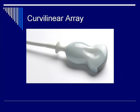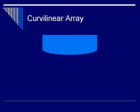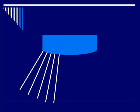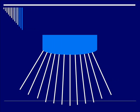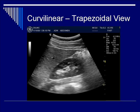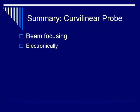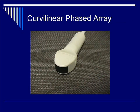Next, let's talk about curvilinear array. Typically it consists of 128 elements, again like the linear array. One element or a subset of elements are scanned sequentially. Focusing is done electronically, and it yields a trapezoidal scan pattern. Here is a cartoon of a curvilinear array. As it gives off the ultrasound pulses and scans sequentially from left to right, we create a trapezoidal scan pattern of the resulting soft tissue of interest. Here you see an example of the trapezoidal pattern of the Morrison pouch. In summary, the curvilinear array beam is focused and steered electronically, sequentially scanned via a subset of transducer elements.